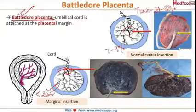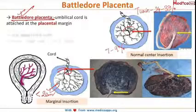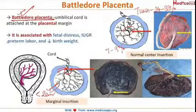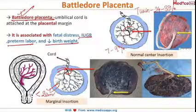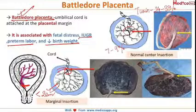Battledore placenta may result in IUGR, preterm labor, and decreased birth weight. If the placenta is low lying, then during delivery this marginal cord insertion may be compressed, leading to fetal distress.